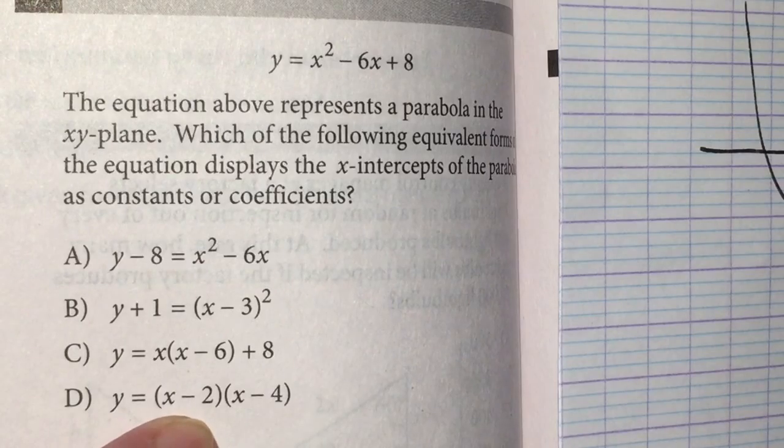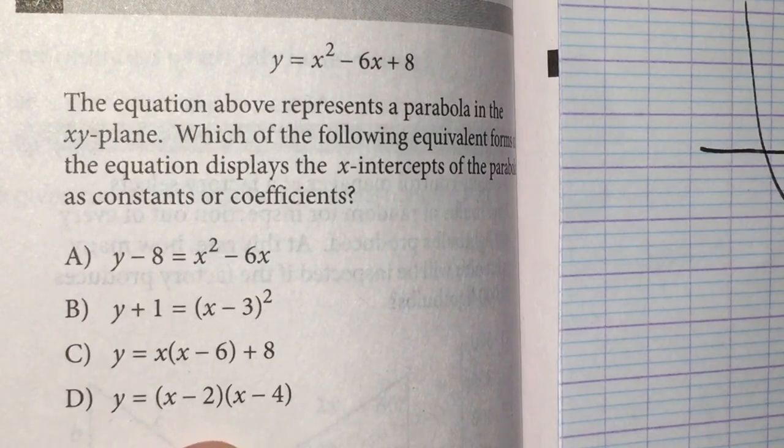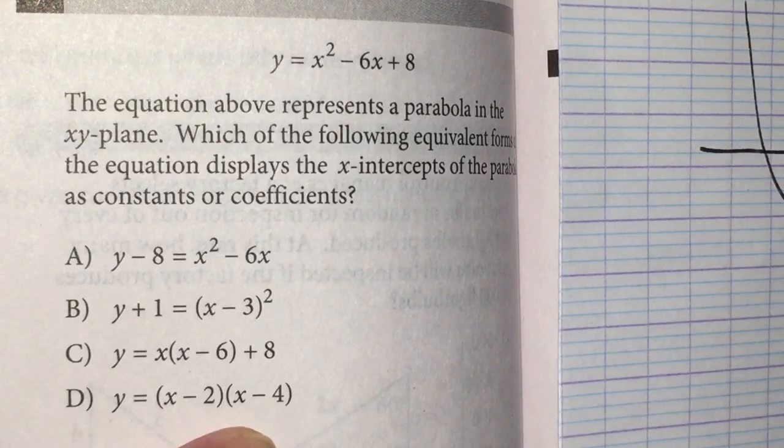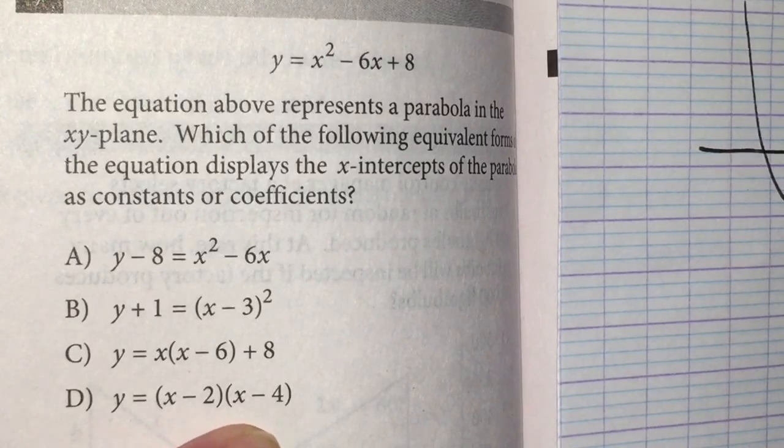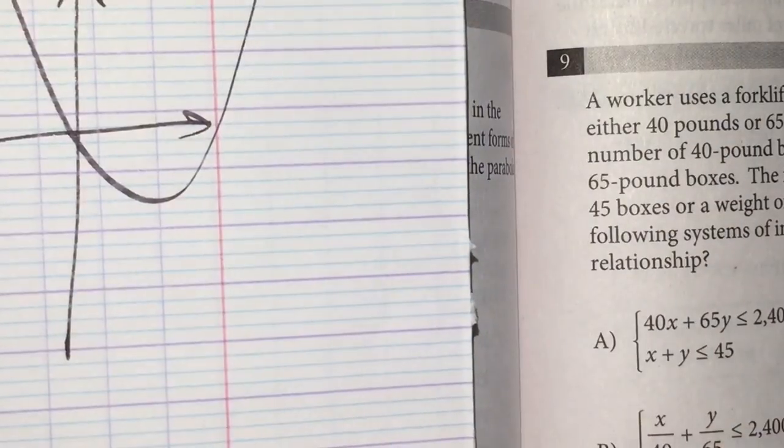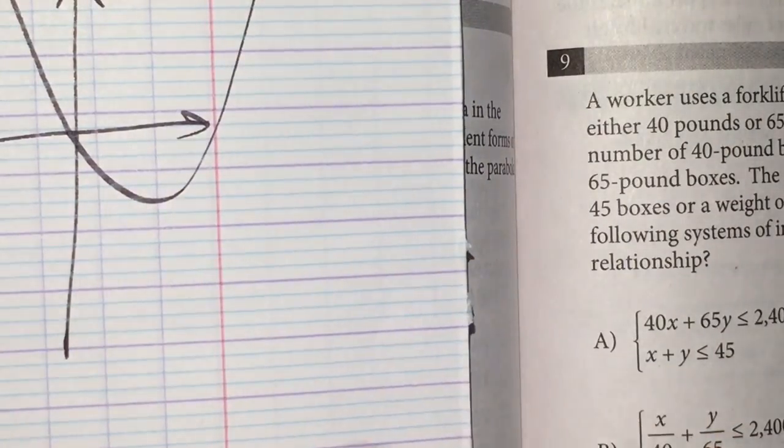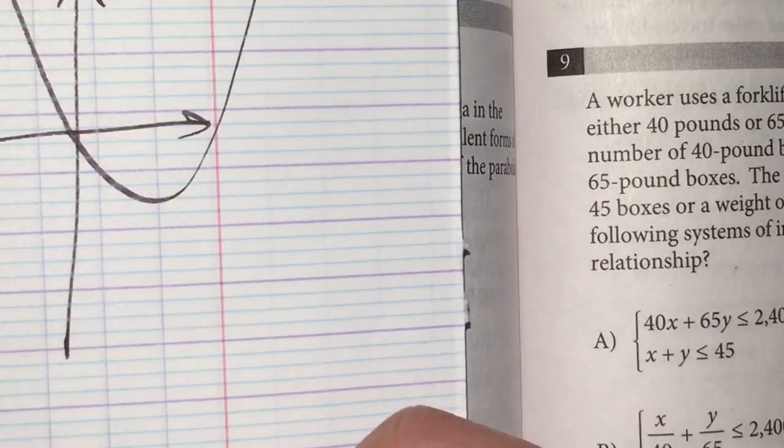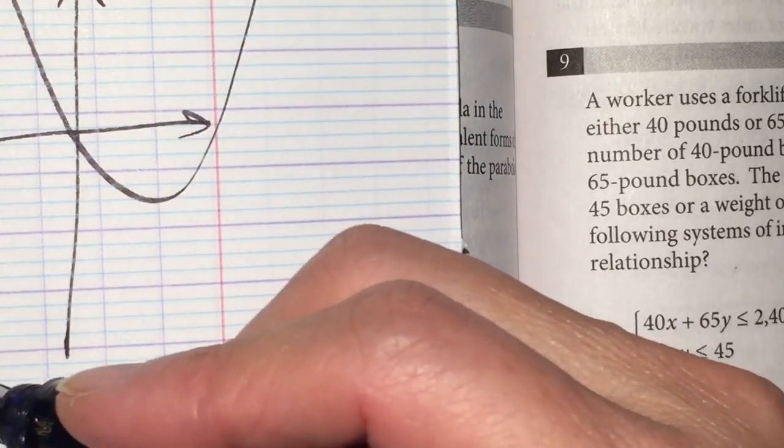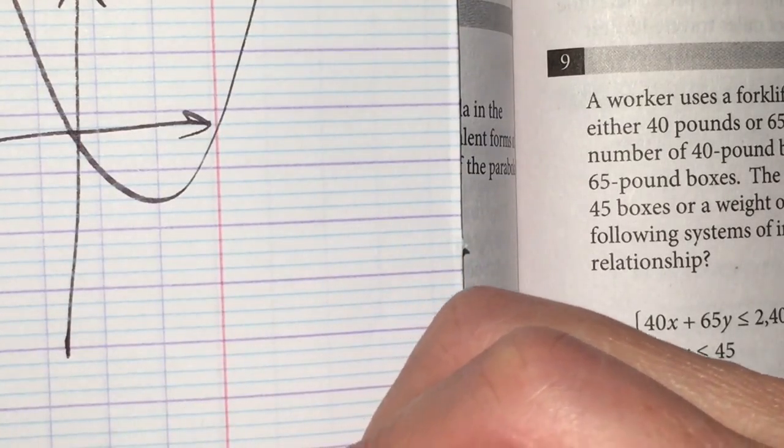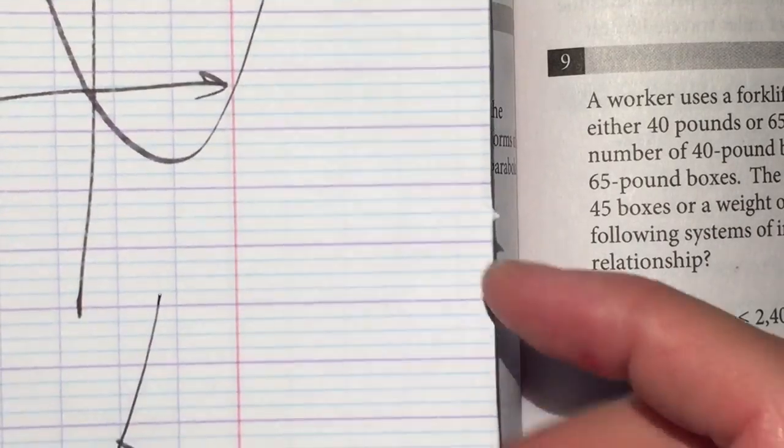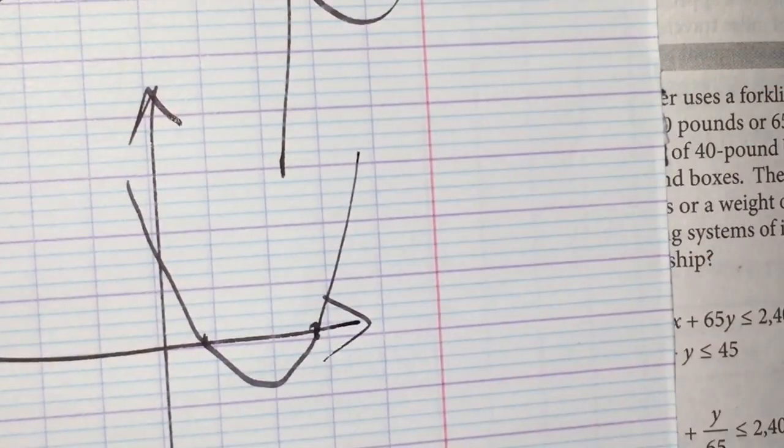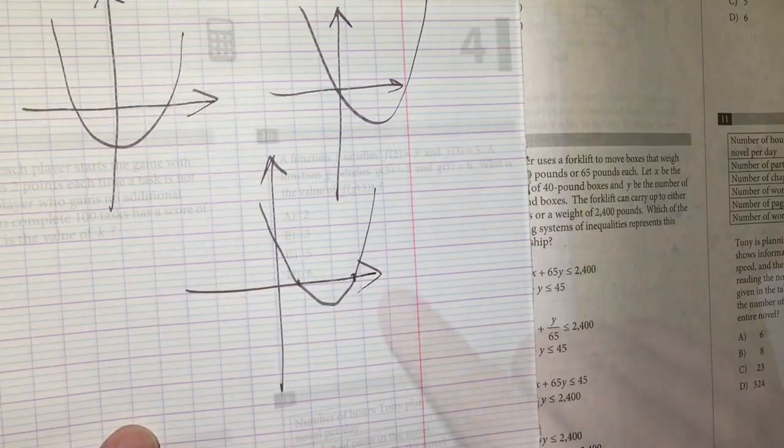This shows the value of x-intercepts. x equal to positive 2 and positive 4. So it's actually something like this. Positive 2, positive 4. Such a parabola.